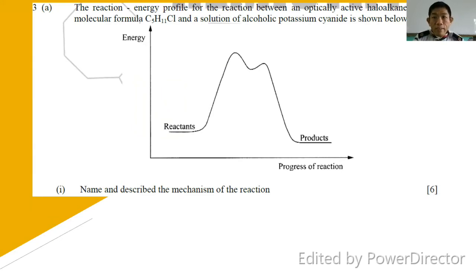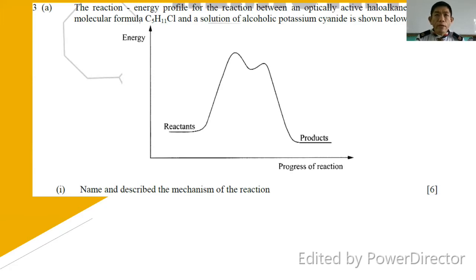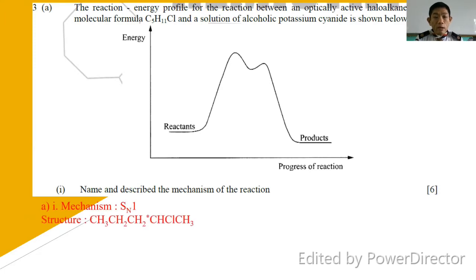The question states it must be an optically active haloalkane. For SN1 mechanism, it favors a tertiary haloalkane; however, a tertiary haloalkane cannot have an optically active molecular formula. Therefore, we move to the second option, which is a secondary haloalkane. Only for a secondary haloalkane can we have an optically active compound. So the suggested structural formula uses SN1 with a secondary haloalkane, specifically 2-chloropentane.